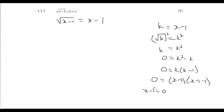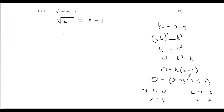Breaking it into two cases: Case 1 gives x - 1 = 0, so x = 1. Case 2 gives x - 2 = 0, so x = 2. That's the k-method — substituting makes things easier with fewer terms, though you do have to substitute back at the end. That approach will earn you all five marks.